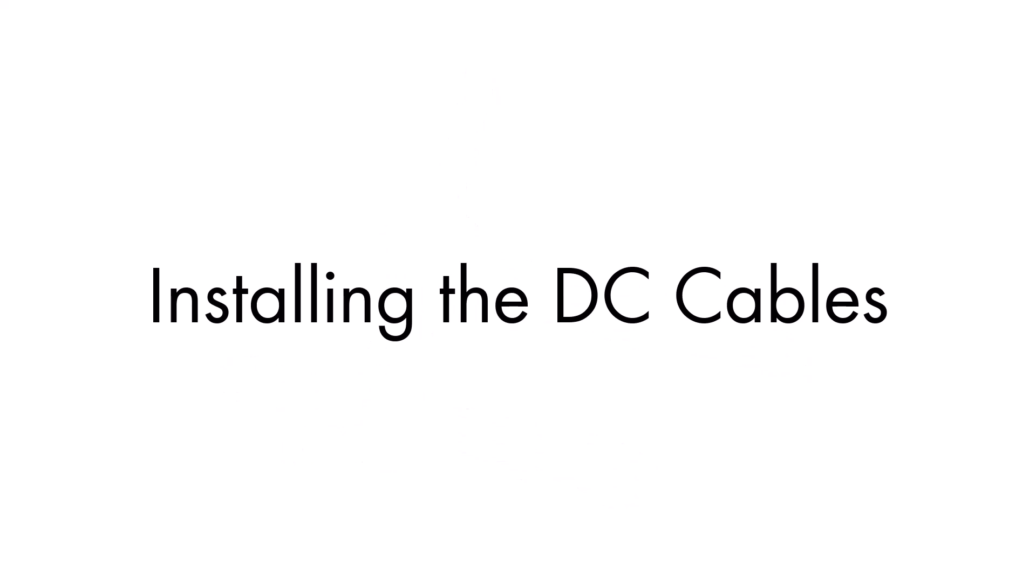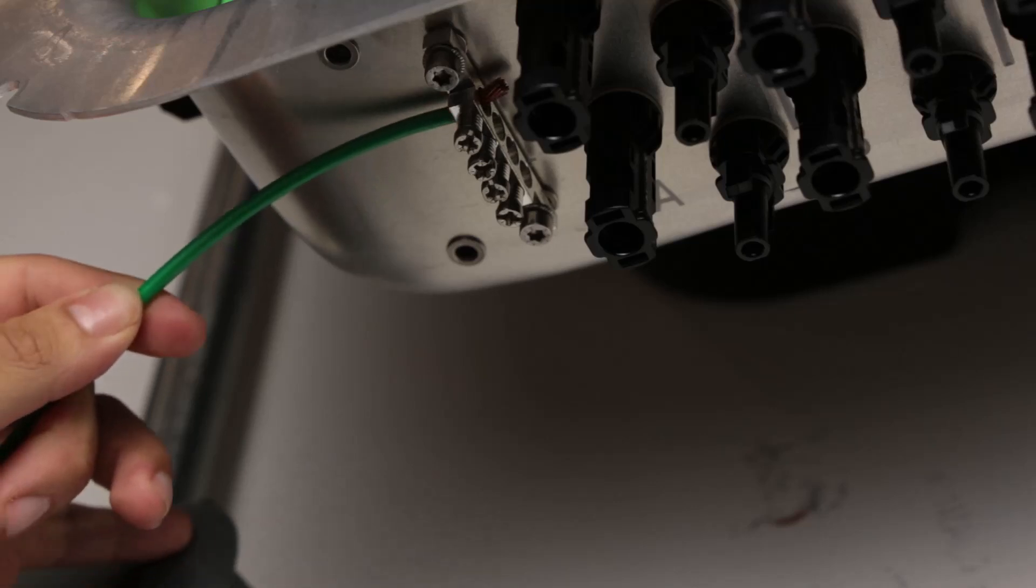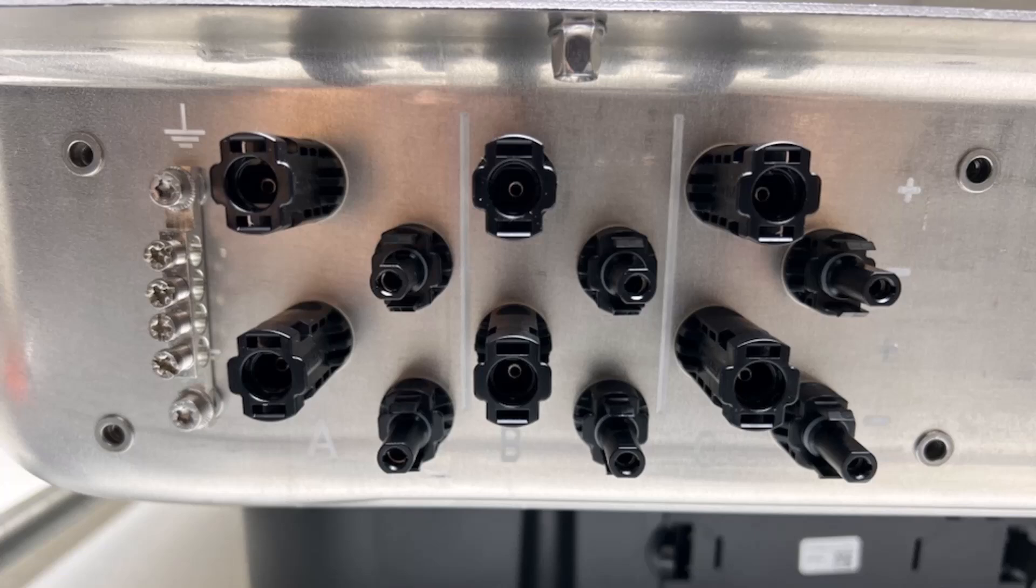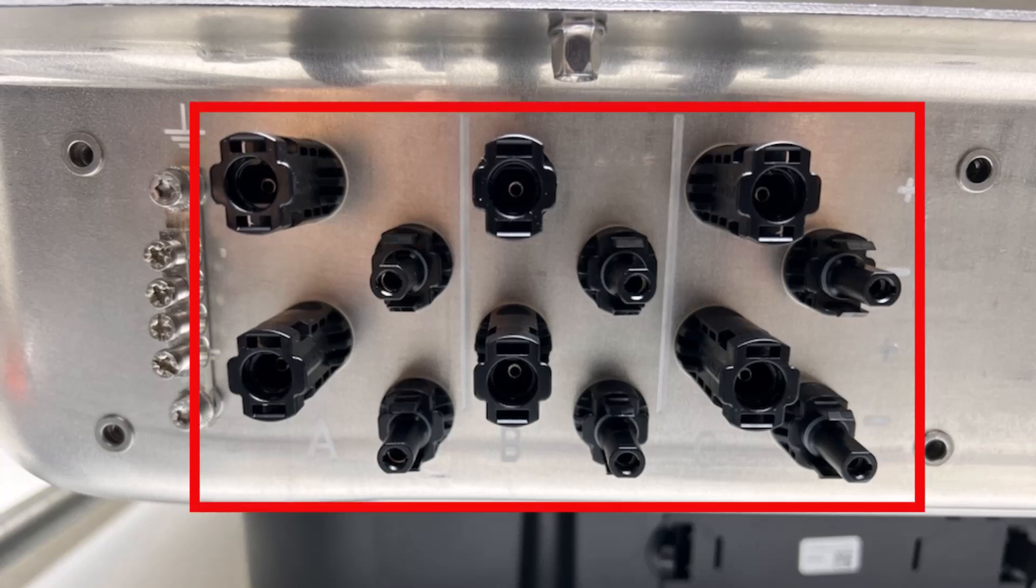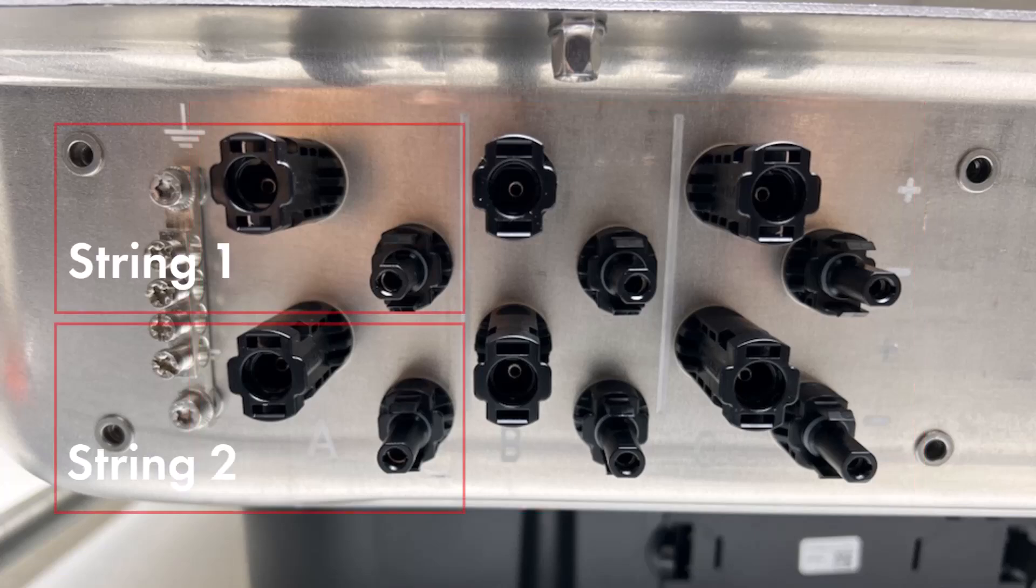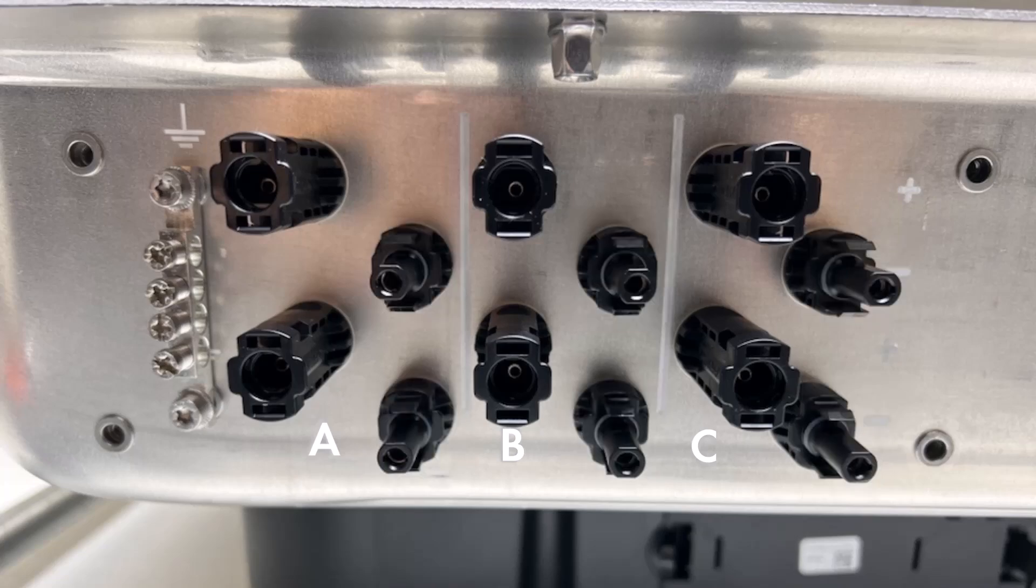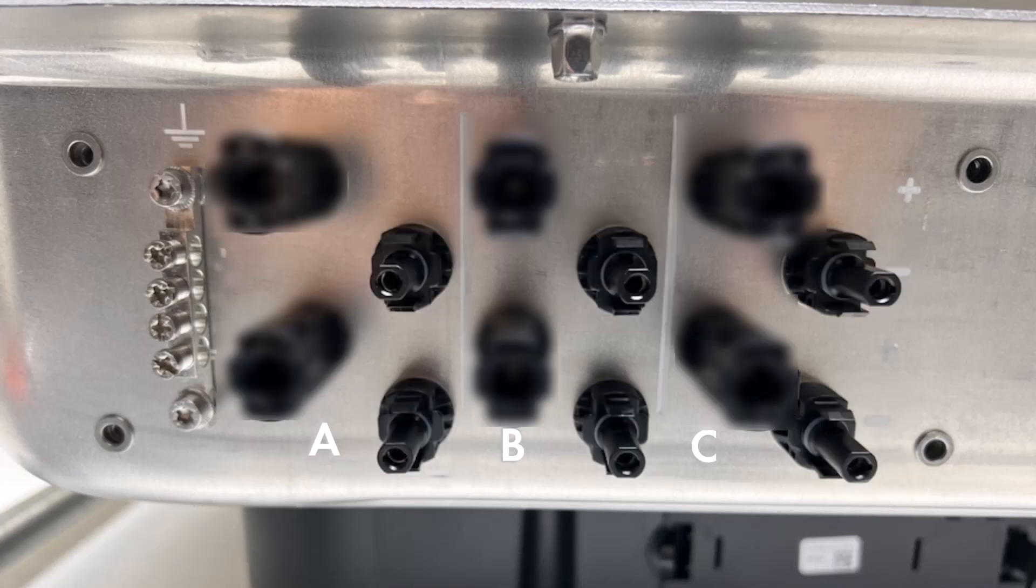Now it's time to connect the home run cables to the inverter bulkhead terminals. Start by connecting the equipment grounding conductor to the ground bus bar. Notice the connector locations here. You have three MPPT channel inputs with two string connections for each, labeled A, B, and C. The connectors to the left are positive, while the connectors to the right are negative.